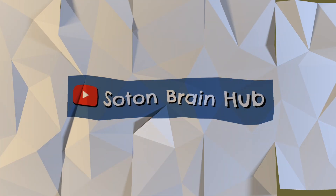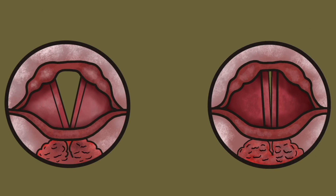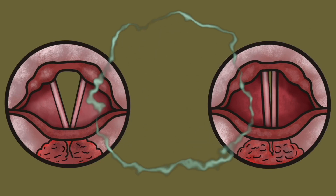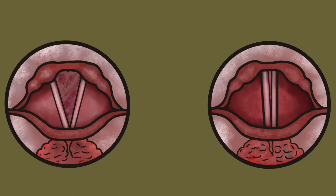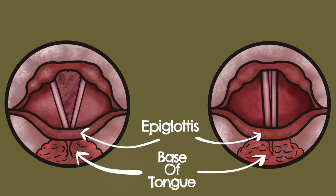Before we move down the pharynx to meet the laryngeal inlet, let's take a look at a schematic to familiarise ourselves with the anatomy. Here we can see two images of the laryngeal inlet. On the left image the vocal cords are abducted apart, and on the right they are adducted together. In these images we are looking directly down the throat and we can see the base of the tongue as well as the epiglottis, which is currently in the upright or open position. It is in this position when we are breathing to allow air down into the larynx. When eating or drinking, the epiglottis covers the laryngeal inlet to prevent the entry of food and liquid into the lungs.